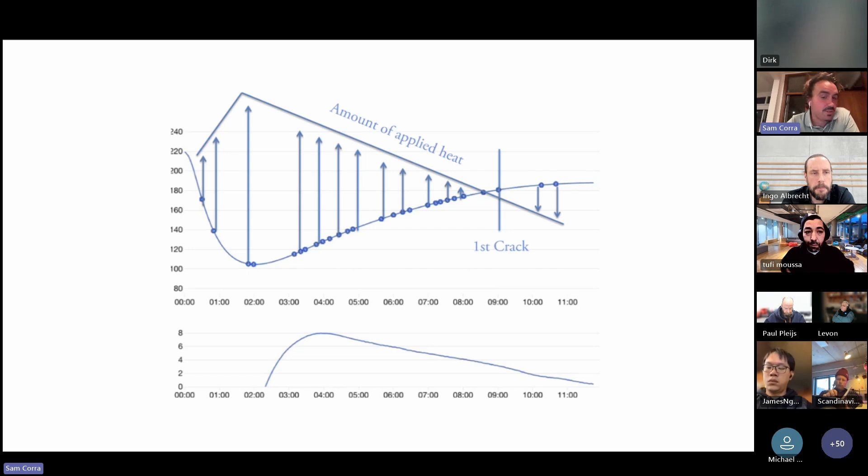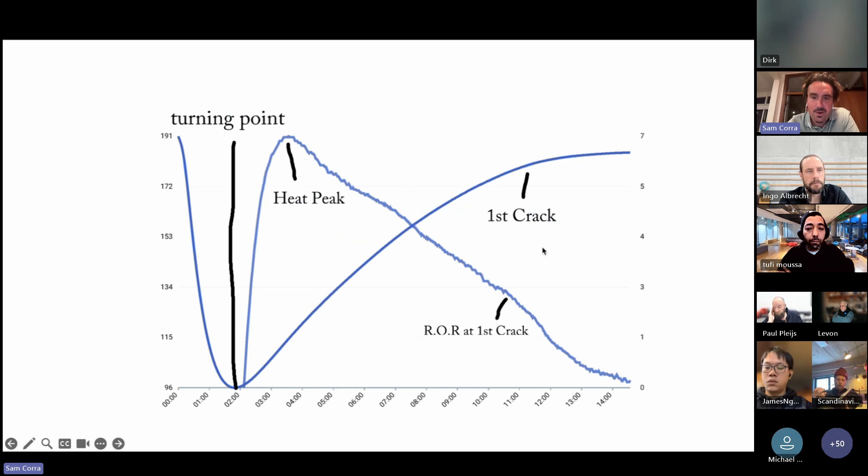But we will need to manage generally throughout this middle section here a lower amount of applied heat in order to make sure that when we come into first crack, we are not overpowering that coffee and starting a snowball or losing control. That's very much for those low densities or coffees dried in cherry.